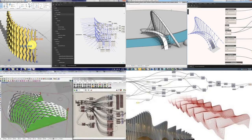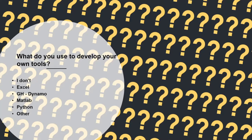This brings me to the next poll. I've been talking about Grasshopper, but there are many other ways to create tools. I'm interested to know: what do you use to develop your own tools? Maybe you don't develop any at all — that's also a valid answer. Does your company use Excel, Grasshopper, Dynamo, Python, or something else? I'm curious to hear what you do.